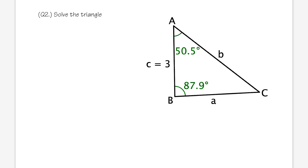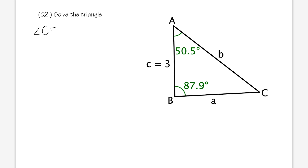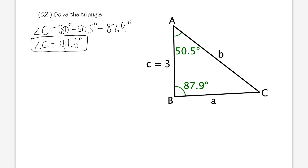For the second example, we are given angle A = 50.5° and angle B = 87.9°, with side c = 3. We can immediately find angle C: C = 180° − 50.5° − 87.9° = 41.6°.